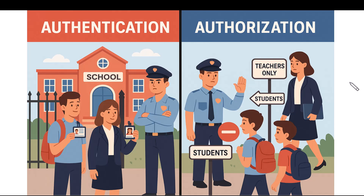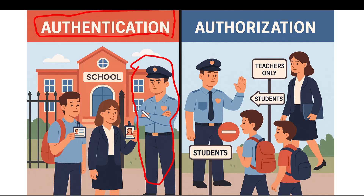Let's talk about authentication and authorization. In the previous part, we created our login and registration — that's our authentication part, where we type our username or email and password to log in. This does the job of the security guard inside a school management system, where the security guard checks our ID cards to verify that we are an employee, student, or teacher of this school. If you are not a member of the school, it will redirect you back to the registration page, telling you to first register, then enter.